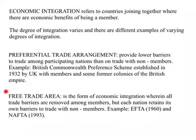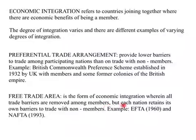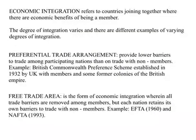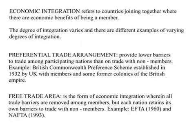The next definition is free trade area — a form of economic integration where all trade barriers are removed amongst members, but each member nation retains its right to set its own barriers to trade with non-members. For example, the European Free Trade Area and NAFTA — the North American Free Trade Area — which is an alliance between the US, Canada, and Mexico. Under a free trade area, all trade barriers between Canada, US, and Mexico are eliminated, but each member nation can impose its own trade barriers with the rest of the world.